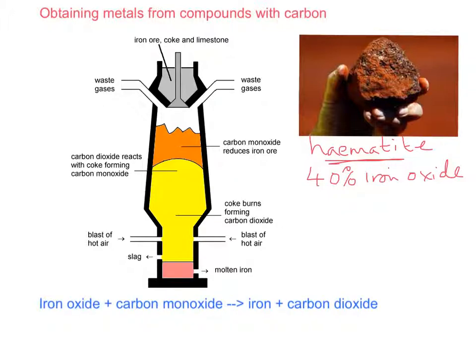The main reaction is with iron oxide here and carbon monoxide to produce iron and carbon dioxide. The carbon monoxide comes from this reaction here. Coke and carbon dioxide form carbon monoxide and this is the main reducing agent for this reaction.